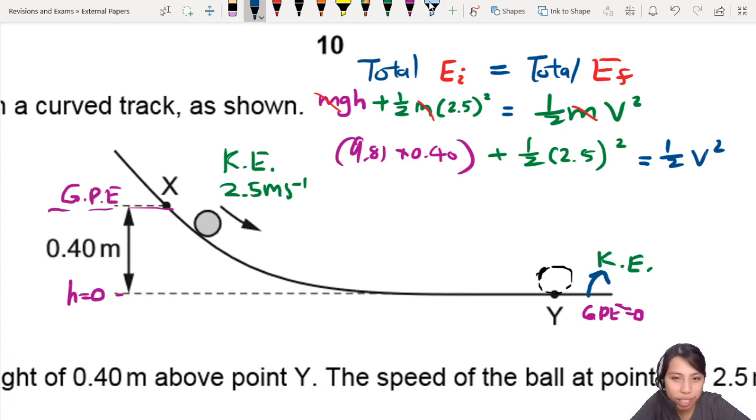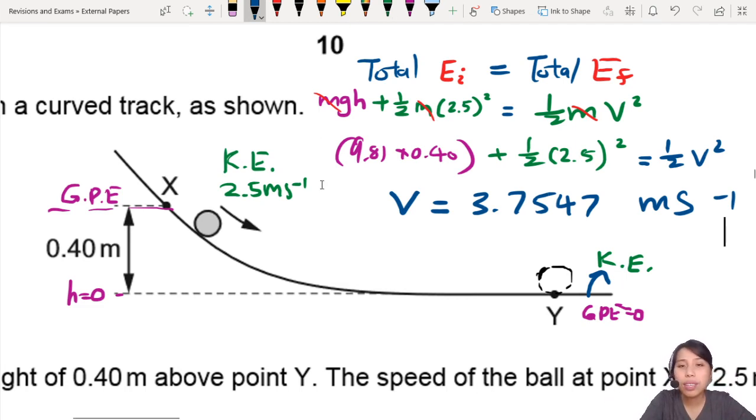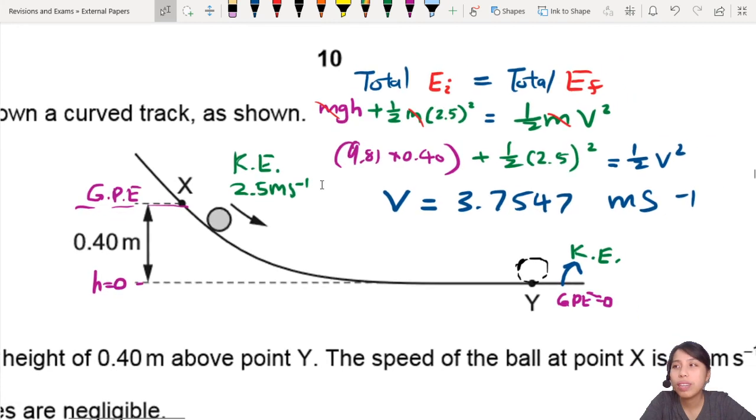So we press some calculation. Calculator, hopefully you get correct. You should get for V, I wrote down my calculations for you, about 3.7547 meters per second. The final answer just rounds off to 2 significant figures, so should be about 3.8, 3.7. So let's take a look at this conservation of energy.